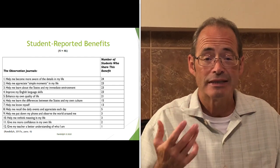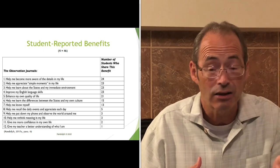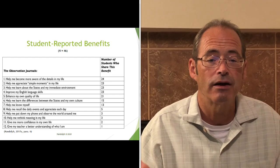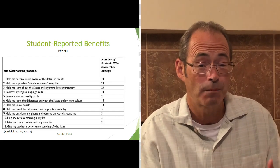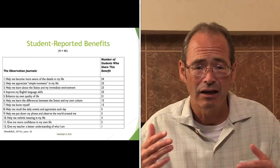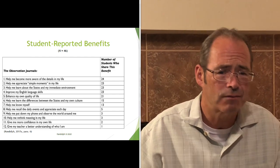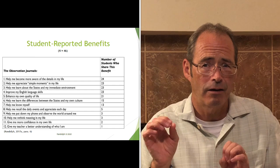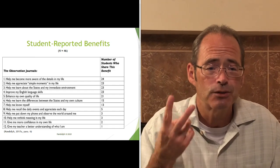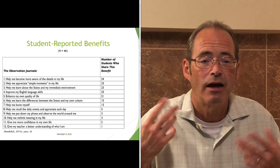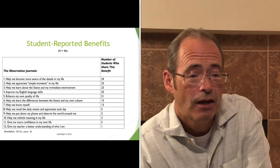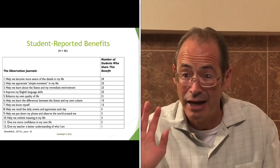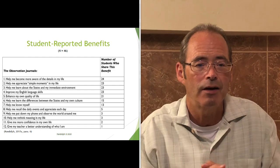The biggest category — 24 of those 46 students — was that observation journals helped them become more aware of the details in their life: 'I'm aware of things I normally would pass up,' 'I'm more meticulous.' Number two, they said the journals helped them appreciate simple moments in their life — things they might not have been aware of before. Number three, the journal seemed to help them learn about the States and their immediate environment — 23 students said that — which really inspired me because I thought of my student from years ago who said she didn't learn anything about the city or state she was studying in.